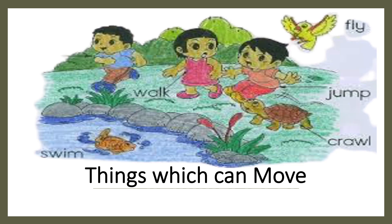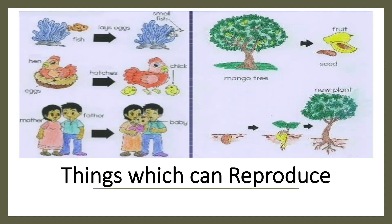Things which can move — such as swimming, walking, flying, jumping, and crawling — are considered as living things. Things which can reproduce, such as plants, animals, and human beings, are also considered as living things.